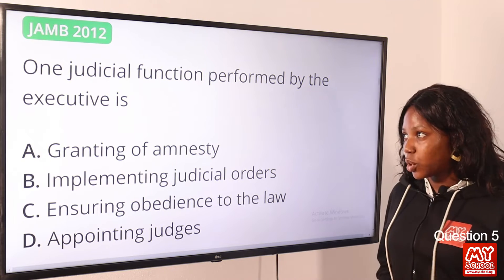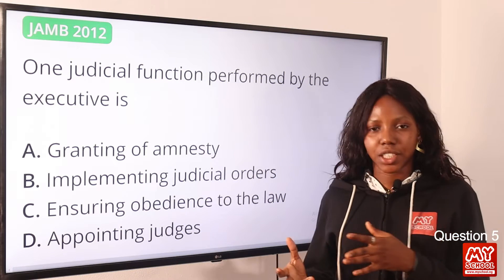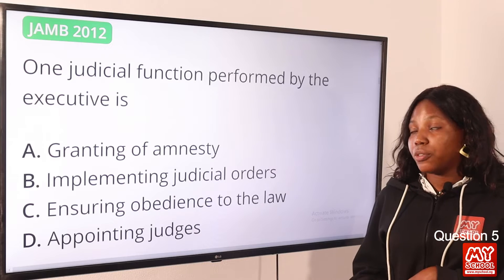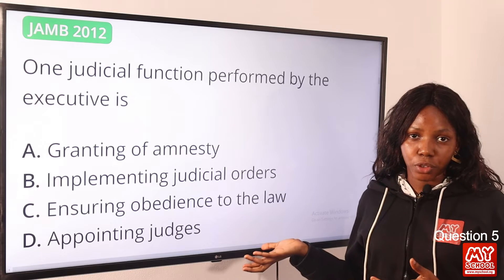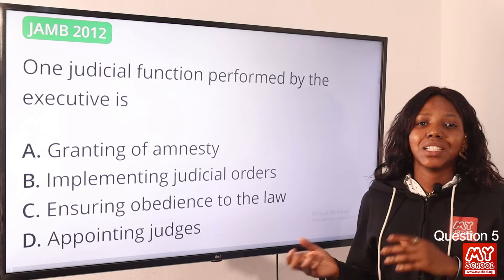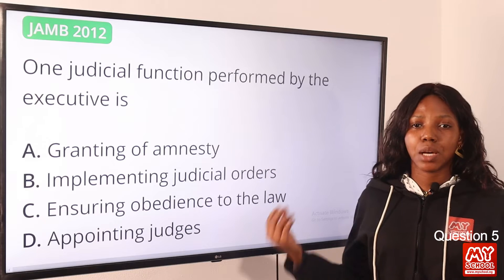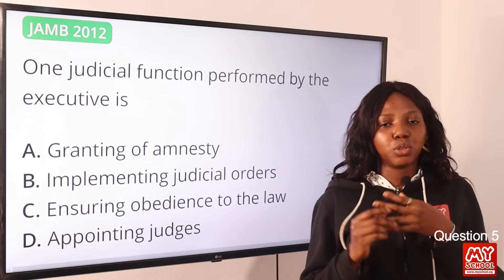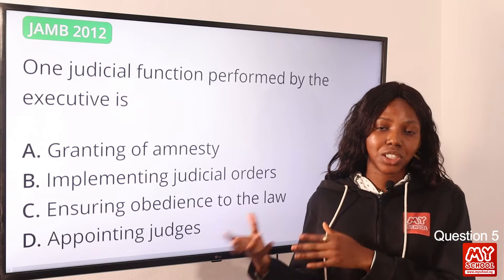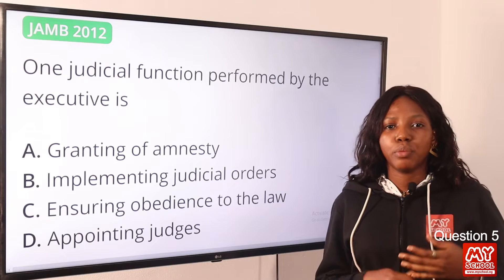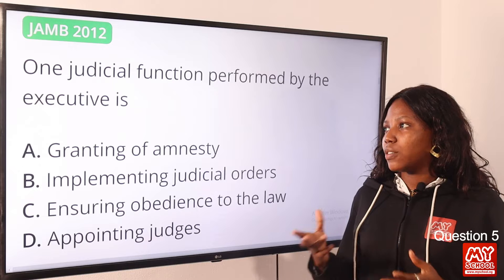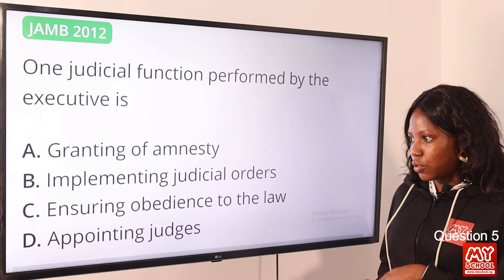Question 5: One judicial function performed by the executive is — the answer is granting of amnesty. Amnesty is granted to a group of people who have committed crimes against the state, such as treason, rebellion, or deserting from the military. So granting of amnesty is one judicial function that the executive performs.